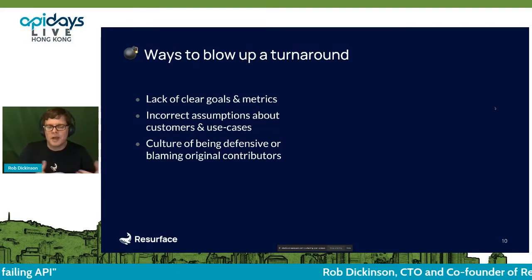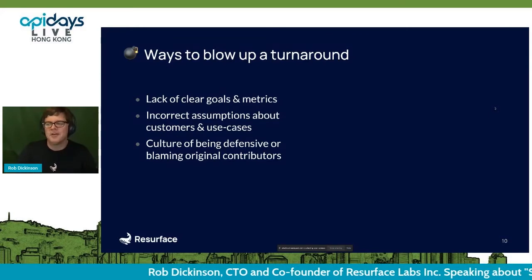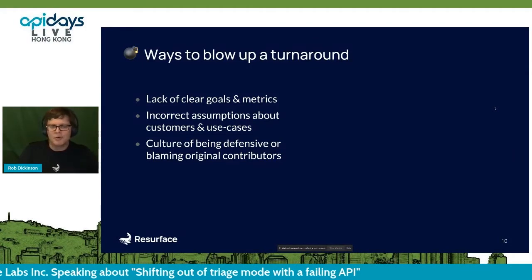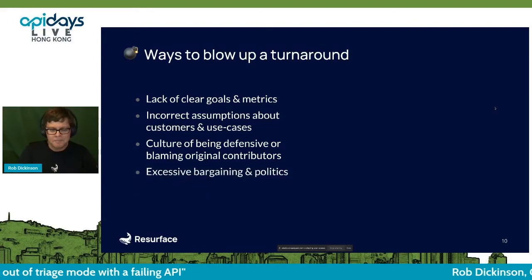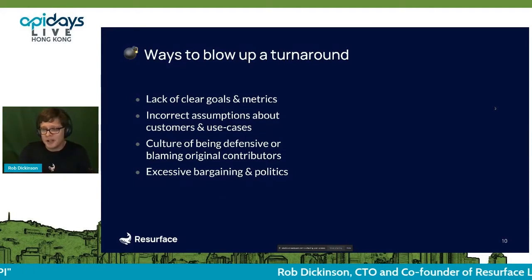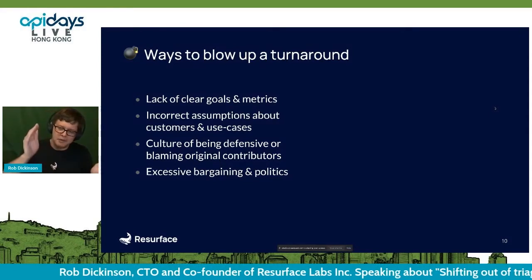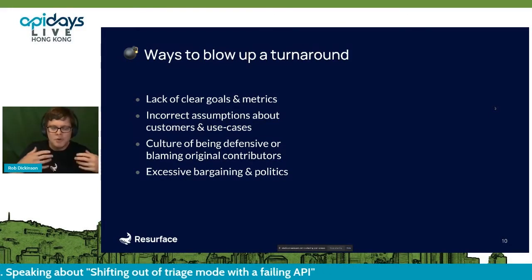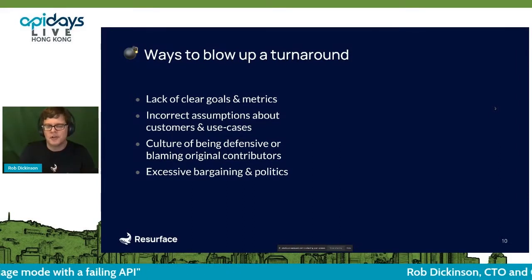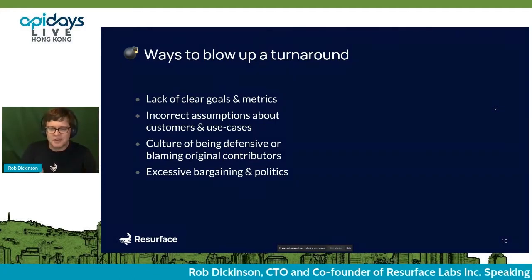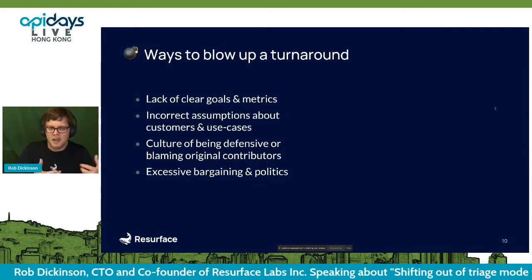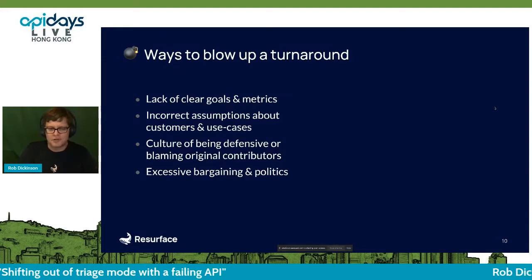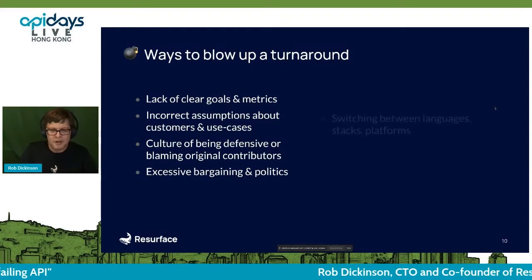What you want instead is a culture of openness where people aren't being punished for past decisions or current ideas. A turnaround is actually the time to entertain all those really creative ideas that weren't getting traction along the way. Another classic way to blow up your turnaround is bargaining — 'if we change this about the API we'll also have to change this to make the team happy.' Take all of that back to your clear goals and metrics; that should be your north star, not something you have to bargain around.